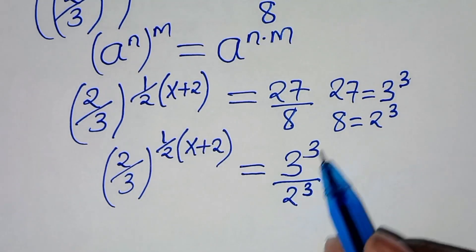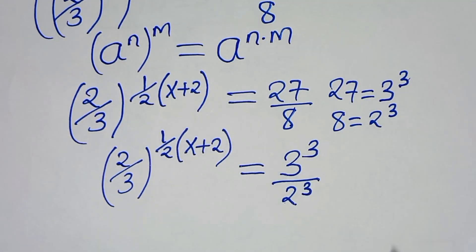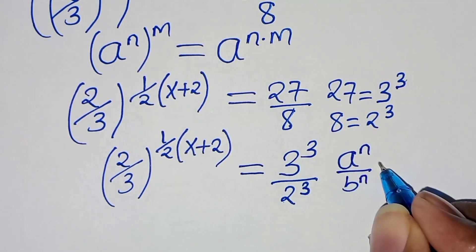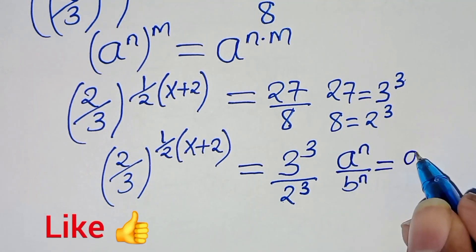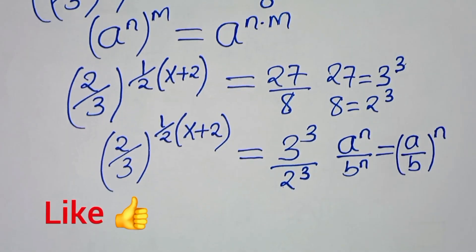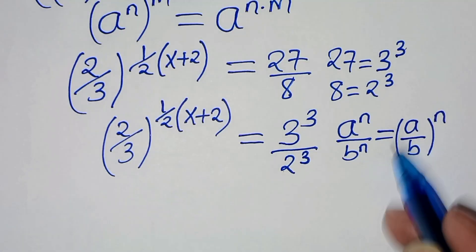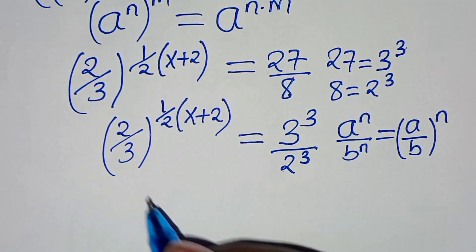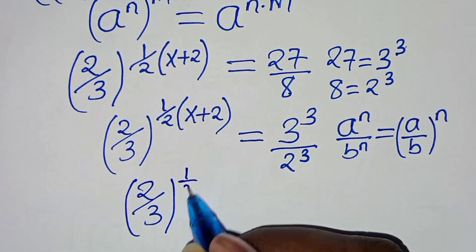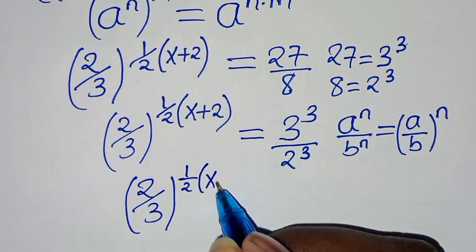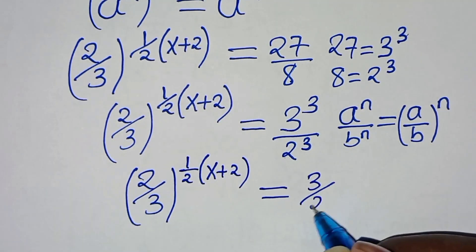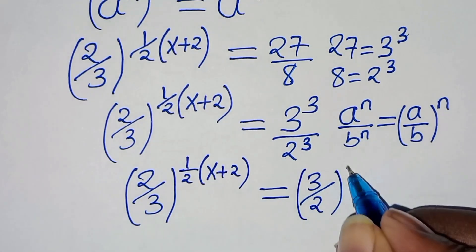Now, we have 3 to the power of 3 and 2 to the power of 3. This is in the form of a to the power of n over b to the power of n, which we can express as a over b raised to the power of n. Applying this exponent property, we have 2 over 3 to the power of one half times (x plus 2), equal to 3 over 2 raised to the power of 3.